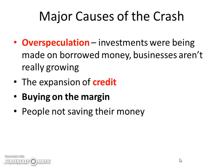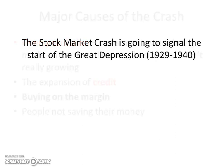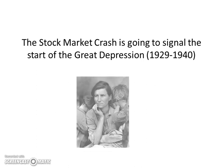The major causes of the crash: over-speculation, where investments were being made on borrowed money and businesses weren't really actually growing; the expansion of credit and people buying on margin; and people just not saving their money. The stock market crash is going to signal the start of the Great Depression.